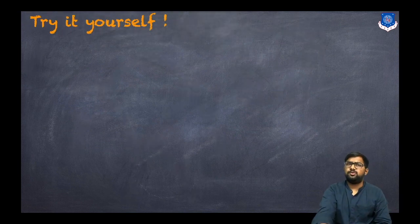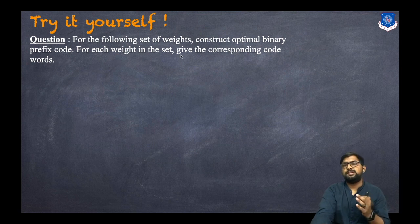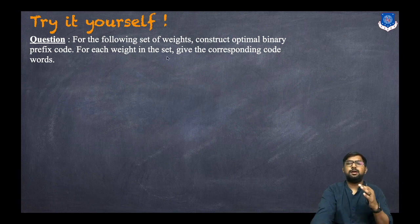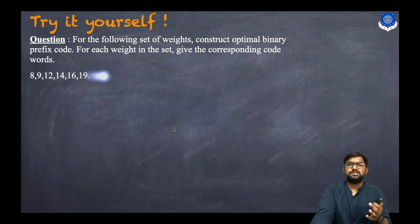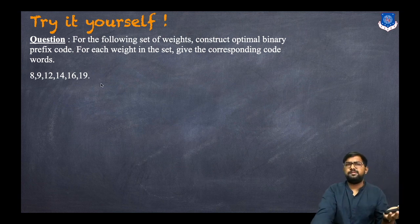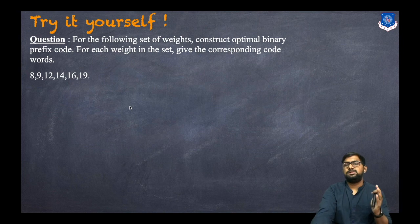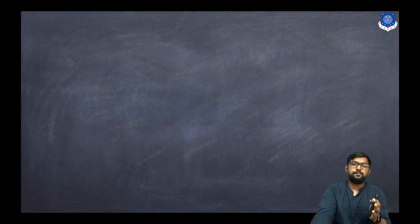Now try it yourself. Using the same procedure, construct the optimal binary prefix code for the following set of weights: 8, 9, 12, 14, 16, 19. No letters are given, only frequencies, and they are already in increasing order. Apply the same Huffman procedure to find the code words for each weight. Thank you.